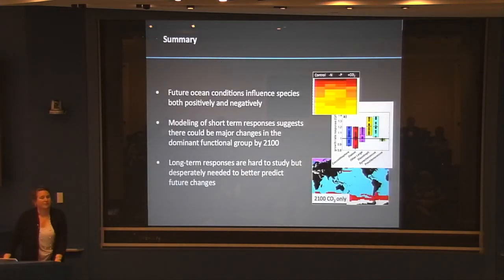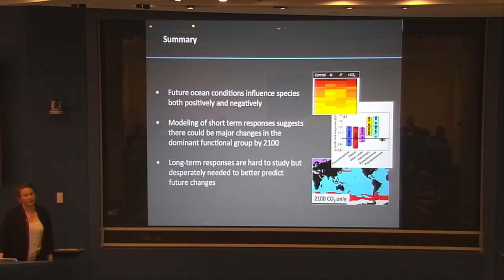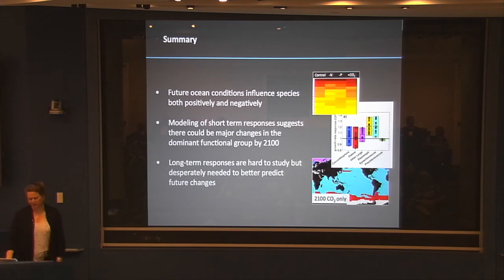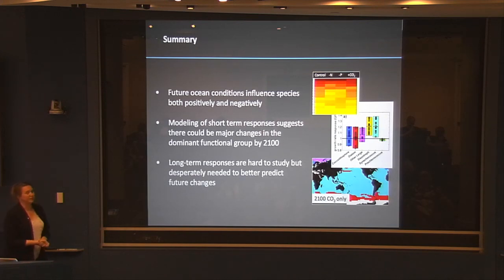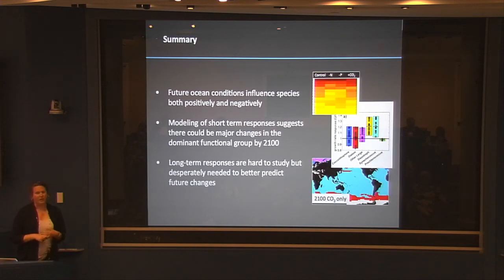Regarding CO2 versus pH: it depends on the study and how the experiment was conducted — you can manipulate CO2 or pH, and they do different things to the carbon chemistry. The compilation included studies that did both. Summary: future ocean conditions influence species both positively and negatively, modeling of short-term responses suggests major changes in the dominant functional group by 2100, but we really need longer-term studies, combined factorial studies, and response curve studies to better predict future changes.